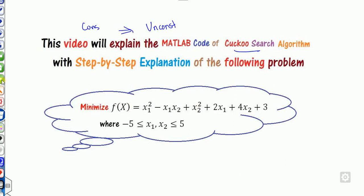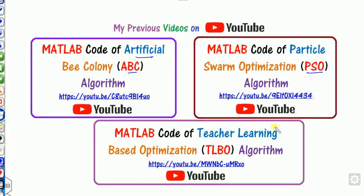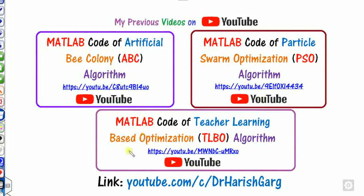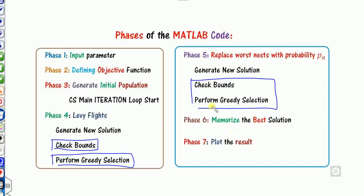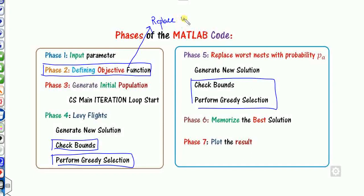This is the same objective function we used in previous MATLAB codes for ABC, PSO, and TLBO, which are also available on this YouTube channel. We will design the MATLAB code in seven phases — check bounds and greedy selection are similar to phases 4 and 5. The only thing you need to change in the MATLAB code is the objective function f of x — replace it with your own and the rest remains exactly the same.